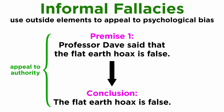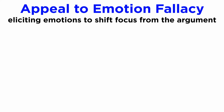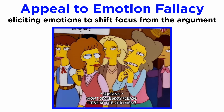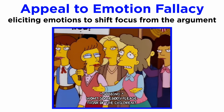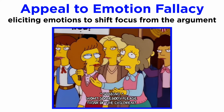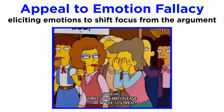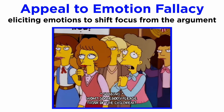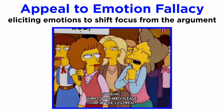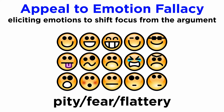Going back to the first informal fallacy we saw in the previous tutorial, the appeal to authority also has similar versions, as it isn't the only kind of fallacy that tries to appeal to something other than the argument itself. Some of them include appeals to emotions, as with the classic Simpsons quote: 'Won't somebody please think of the children?' — where Helen Lovejoy attempts to sidetrack discussions by getting an emotional response with this dramatic utterance about hypothetical children unrelated to the problem at hand. This happens every time someone attempts to shift focus away from the proper argument through either pity, fear, or flattery.